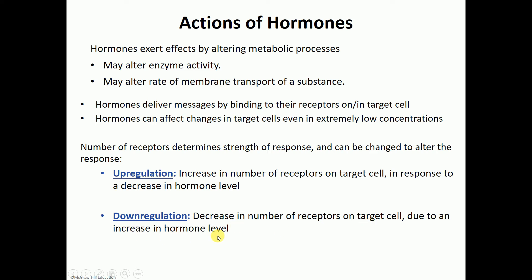In the opposite scenario, a person with hypothyroidism has a thyroid gland that is not making enough thyroxin. The target cells would up-regulate — increasing the number of receptors — in order to pick up any thyroxin molecule that is out there. So target cells have the ability to either up-regulate or down-regulate.